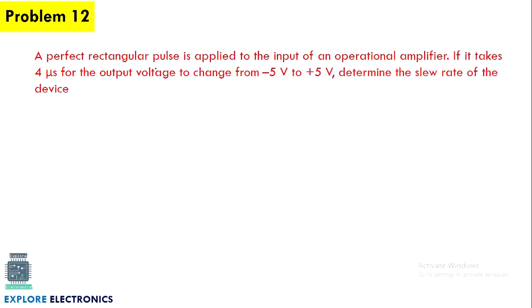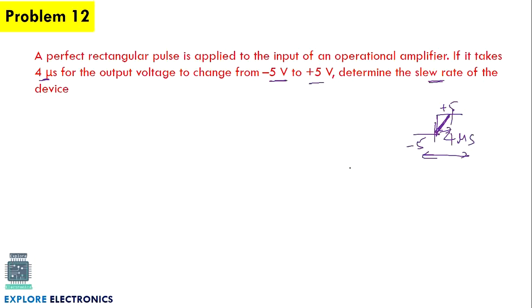The next problem is again on operational amplifiers, determining the slew rate. A perfect rectangular pulse is applied to the input of an op-amp. It takes 4 microseconds for the voltage to change from minus 5 volts to plus 5 volts. Slew rate is the rate of change of output voltage: delta Vout divided by delta T.